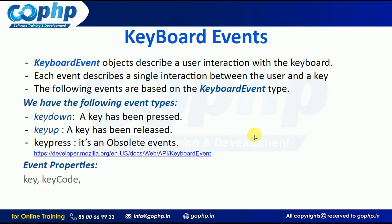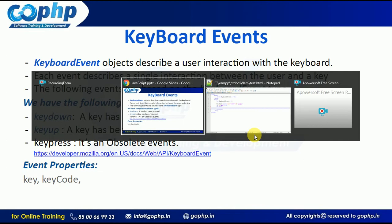In this session we are going to discuss keyboard events. To work with keyboard events we have a keyboard event object that contains a collection of event properties and event types. We have the following event types: keydown, keyup, and one more is keypress. The keypress event is an obsolete event — JavaScript is sincerely recommending that you should not use it.